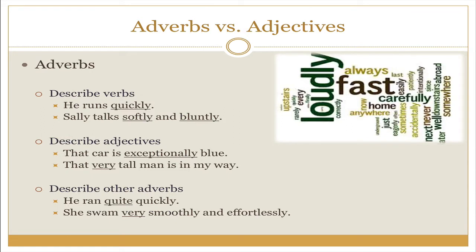Now moving on to the focus of today, we need to look at adverbs. Adverbs usually and mostly describe verbs. The way to remember that is in the word adverb, you have the word verb also. Verbs tend to be action words — he ran, they swam, we will talk — but they could also be linking verbs. If we're using an adverb to describe a verb, we might say he runs quickly. Runs is a verb since it's an action. How does he run? Quickly. Sally talks softly and bluntly. How does she talk? Softly and bluntly.